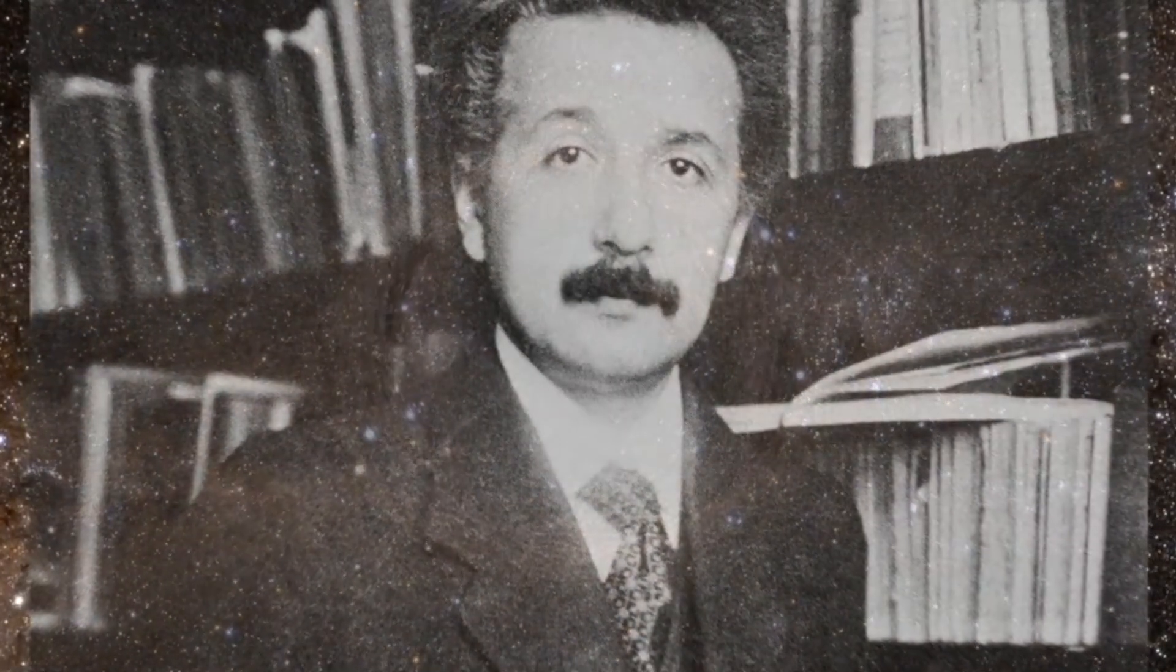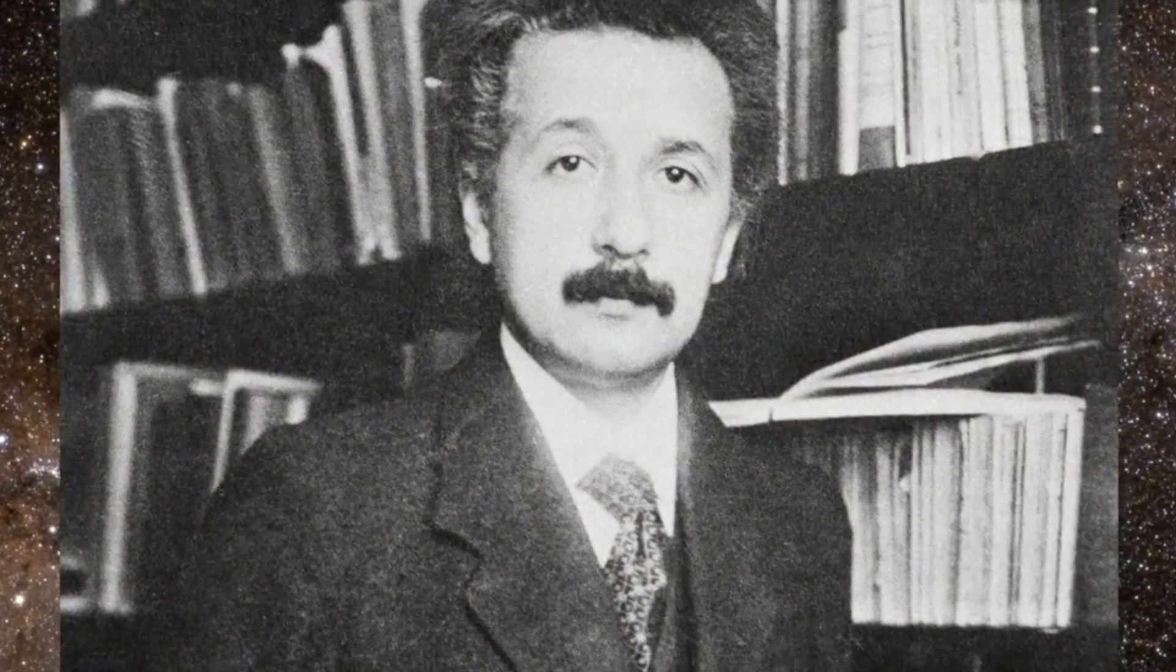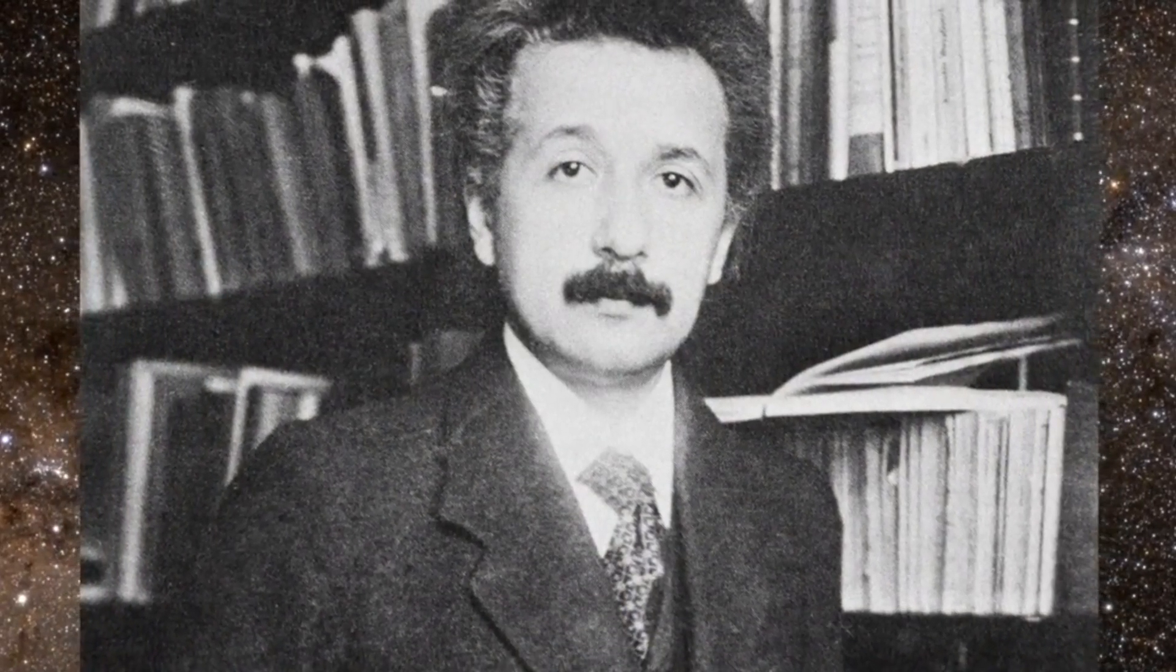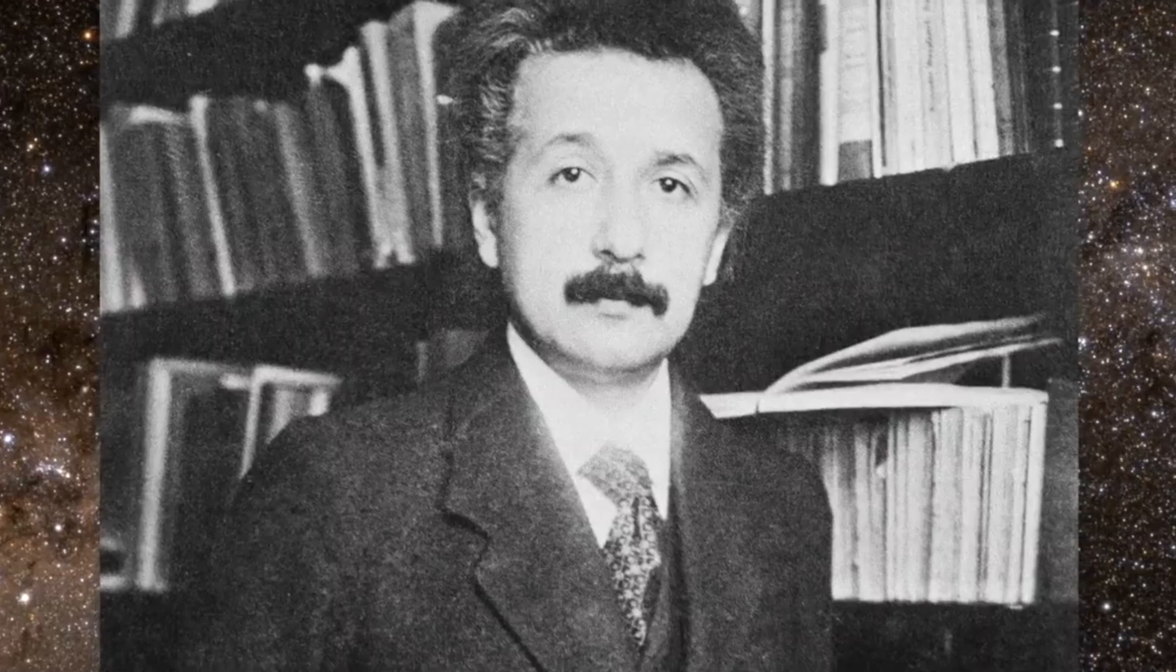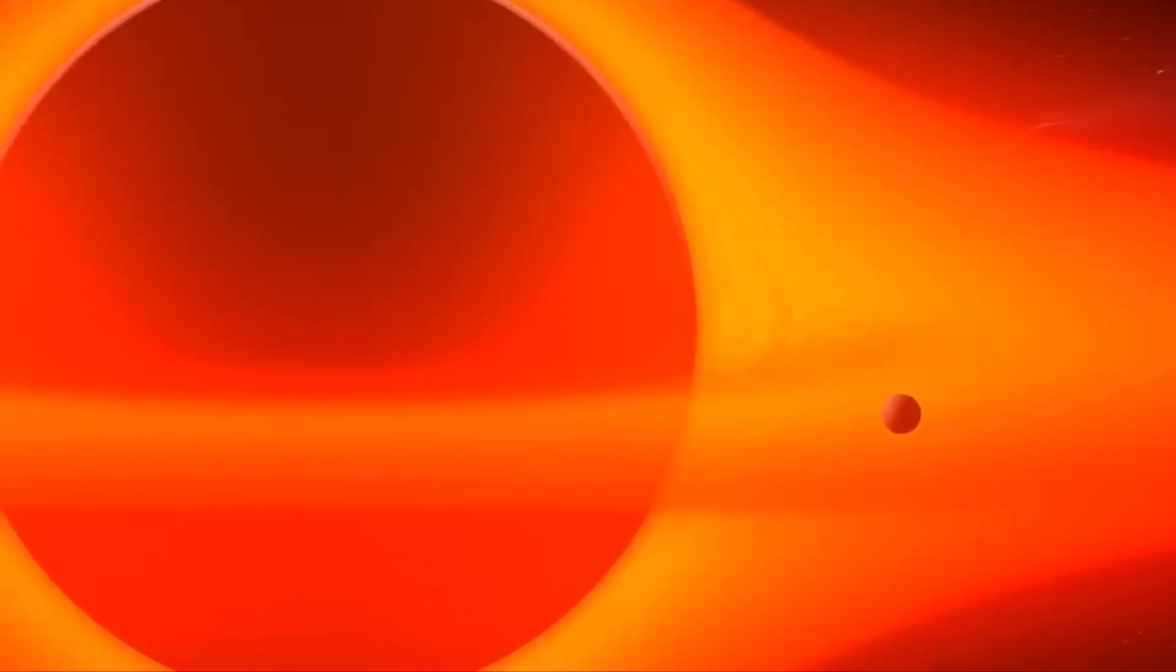Albert Einstein first predicted their existence in 1916 in his general theory of relativity. According to Einstein's theory, massive accelerating objects such as binary star systems composed of white dwarfs,